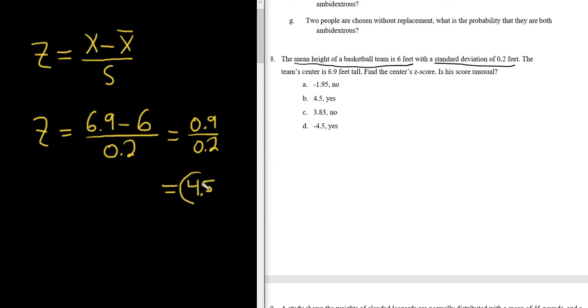And that is bigger than 2, so if it's bigger than 2, or smaller than negative 2, it's unusual. So this would be unusual. And it wants to know if it's unusual, so the answer is yes. So the answer here would be b, 4.5, yes.